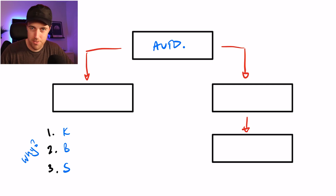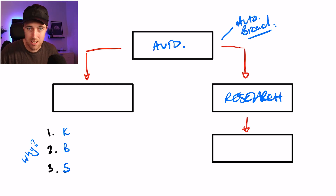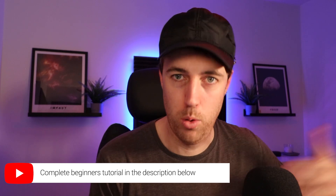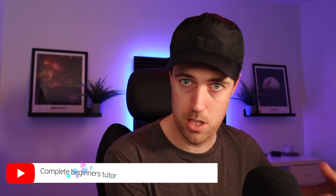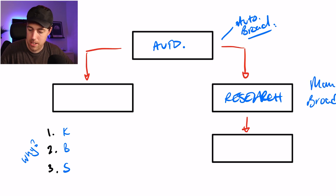Coming down the tree, we're going to have our research campaign. Your auto campaign is going to be auto-targeting broad match — so it's going to really match anything based on your listing, and the Amazon algorithm is going to determine all of that. If any of this terminology doesn't make sense and you're a beginner with PPC, the first video you should watch is the complete tutorial for beginners linked in the description below — it's about an hour long with a glossary of key terms. This is the optimized, updated version of the campaign structure covered there.